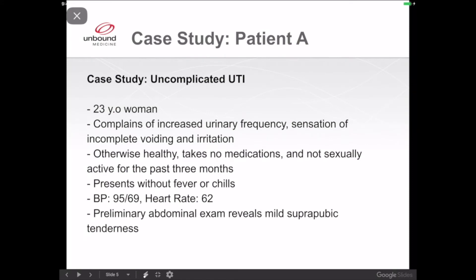Now I'm going to walk you through a clinical scenario. In school, you'll be reviewing case studies or working with patients, and you may be asked to create care plans. Here we have our case study: a 23-year-old woman complaining of urinary frequency, sensation of incomplete voiding, and irritation. She's otherwise healthy, not taking any medication, not sexually active. Her preliminary abdominal exam reveals mild suprapubic tenderness. Let's go back to Nursing Central.